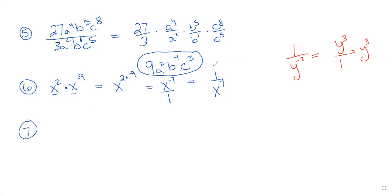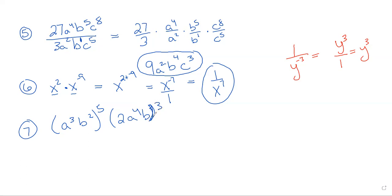Your last question. We have a to the third power, b to the second power, all raised to the fifth power, times a to the fourth power times b, all raised to the third power. We want to make sure that the exponent outside gets distributed to every exponent inside. That outside exponent is going to be multiplied by those exponents inside. Before, when we were multiplying with the same base, we added the exponents — but this isn't a multiplication problem. This is an exponent raised to another exponent, and that rule says you take the outside exponent and multiply it by all the exponents inside the parentheses.